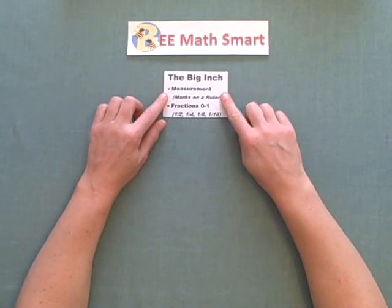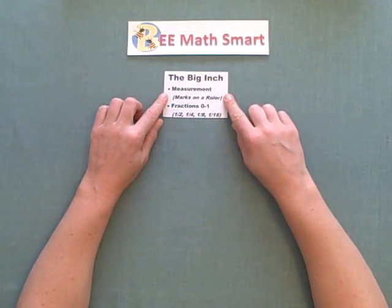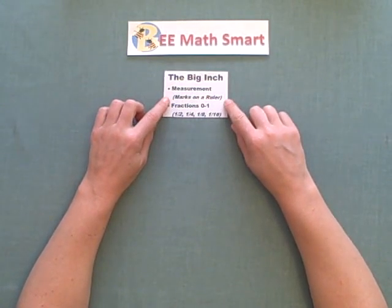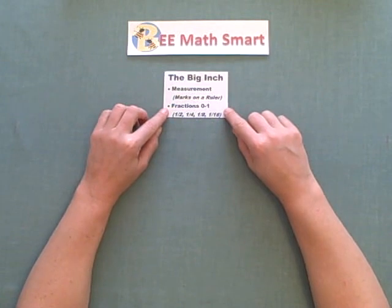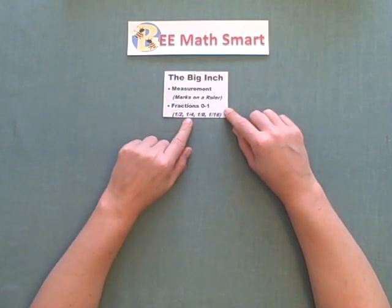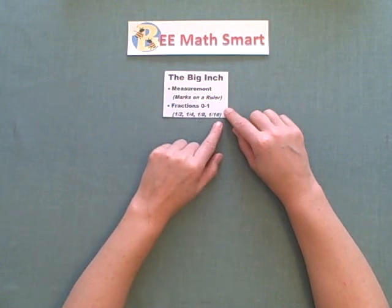This activity specifically works on measurement, the marks on a ruler, and fractions zero to one, specifically the fractions one-half, one-quarter, one-eighth, and one-sixteenth.